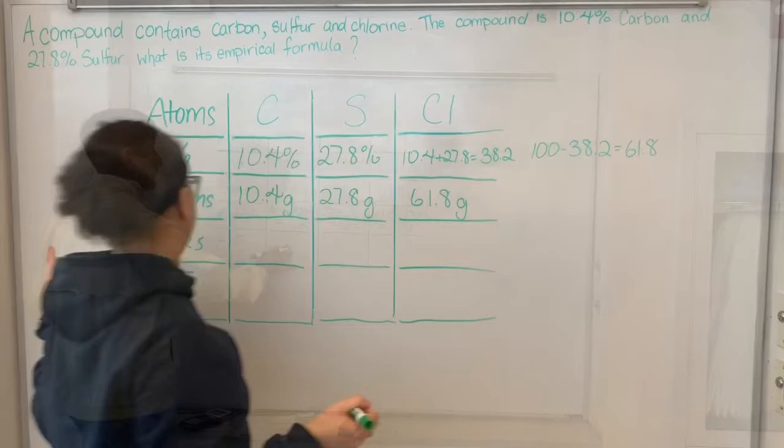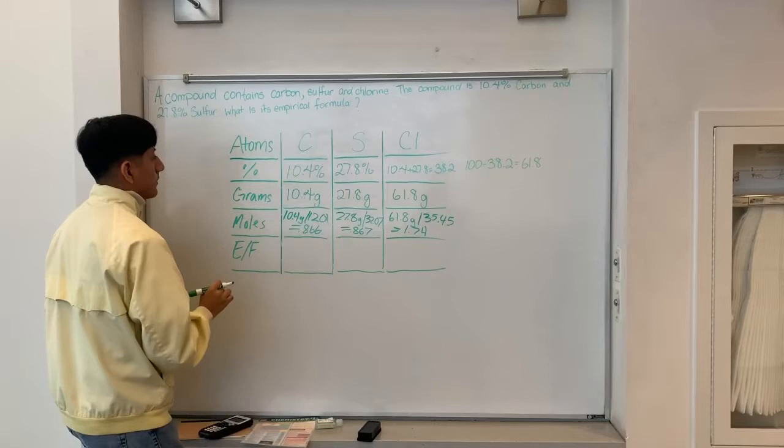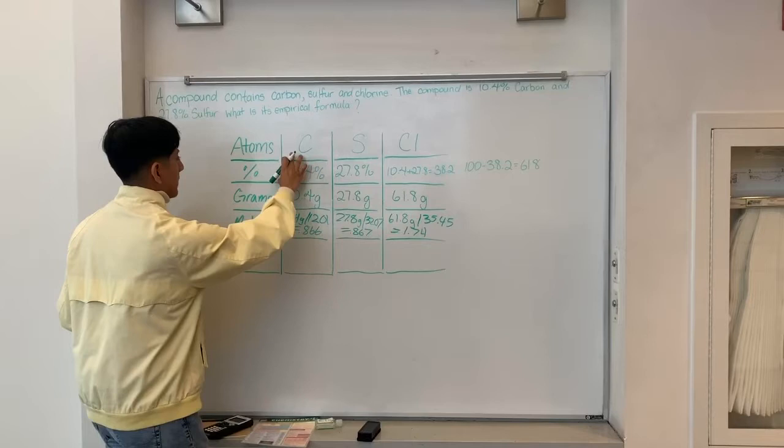So here we have grams for each of the three atoms. To find the moles of each atom, we just take the amount of grams and divide it by the molar mass of each atom.